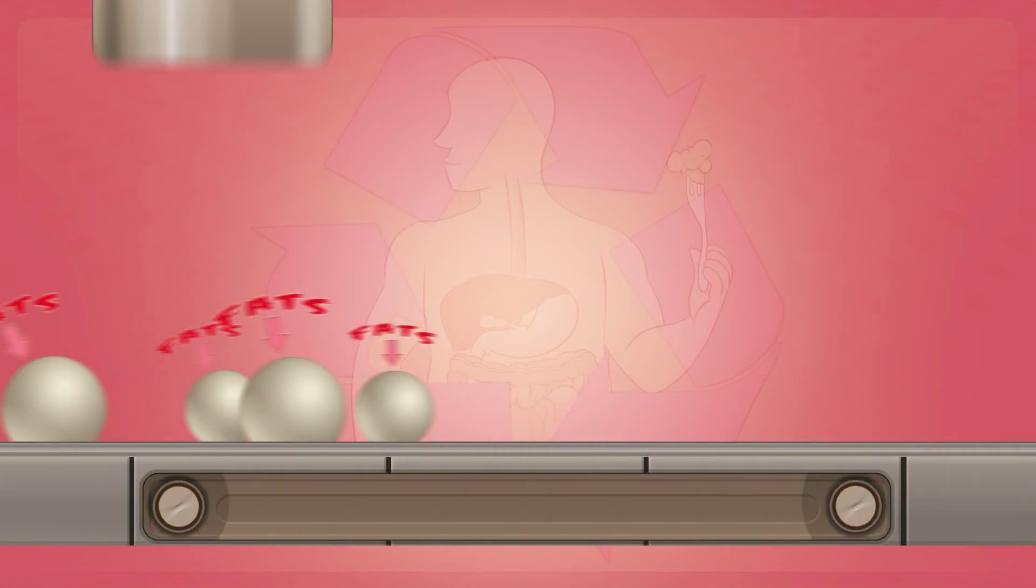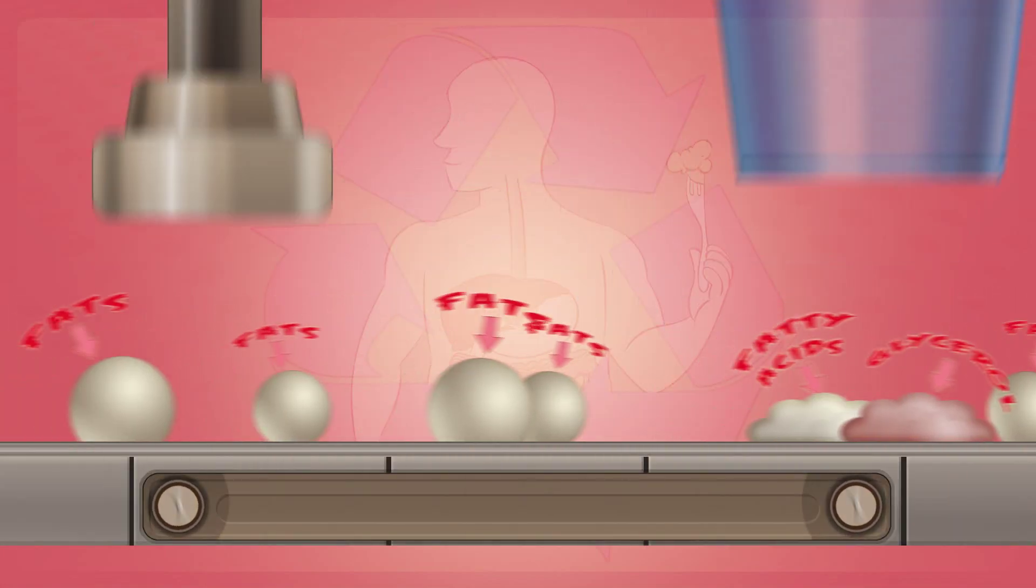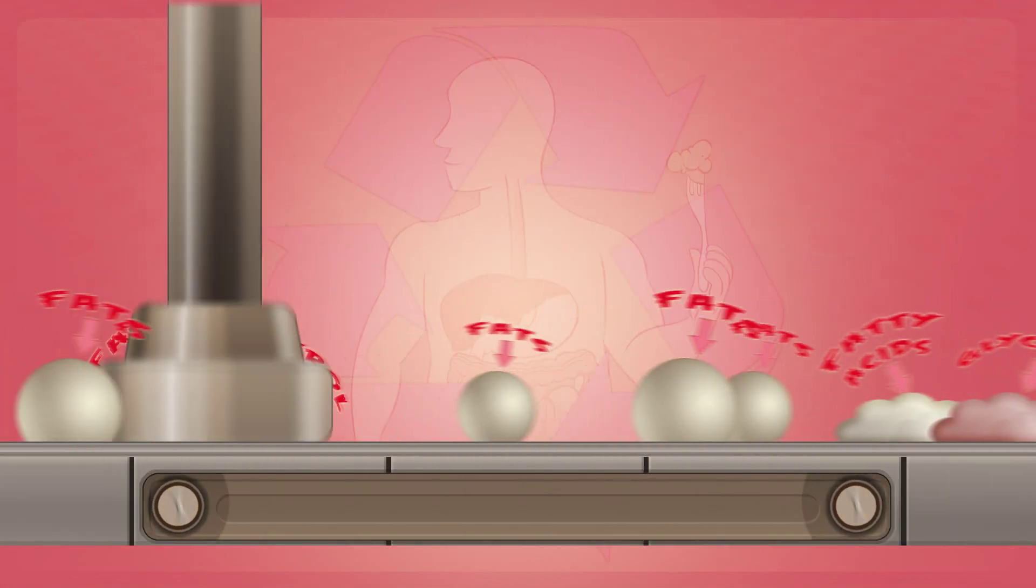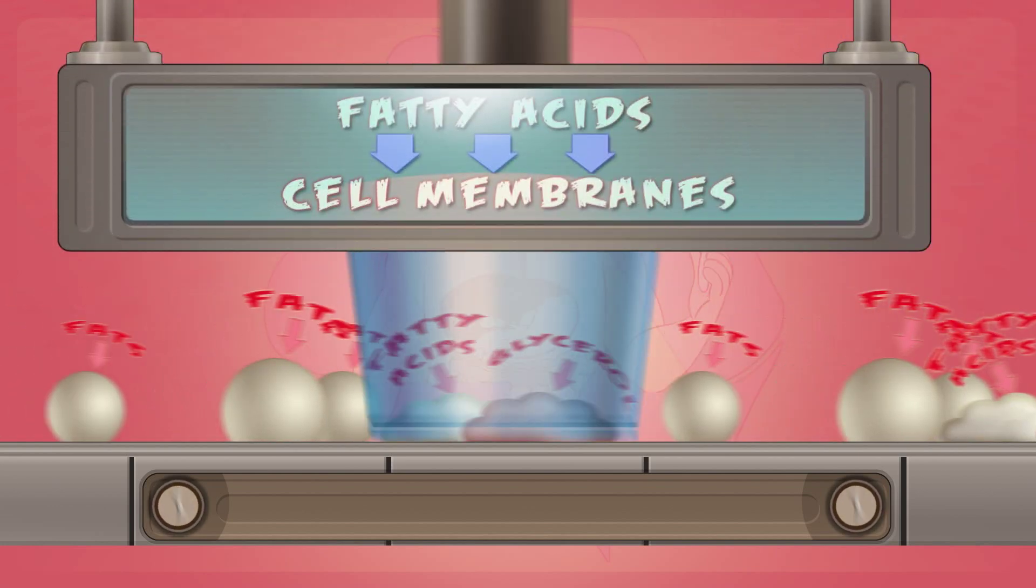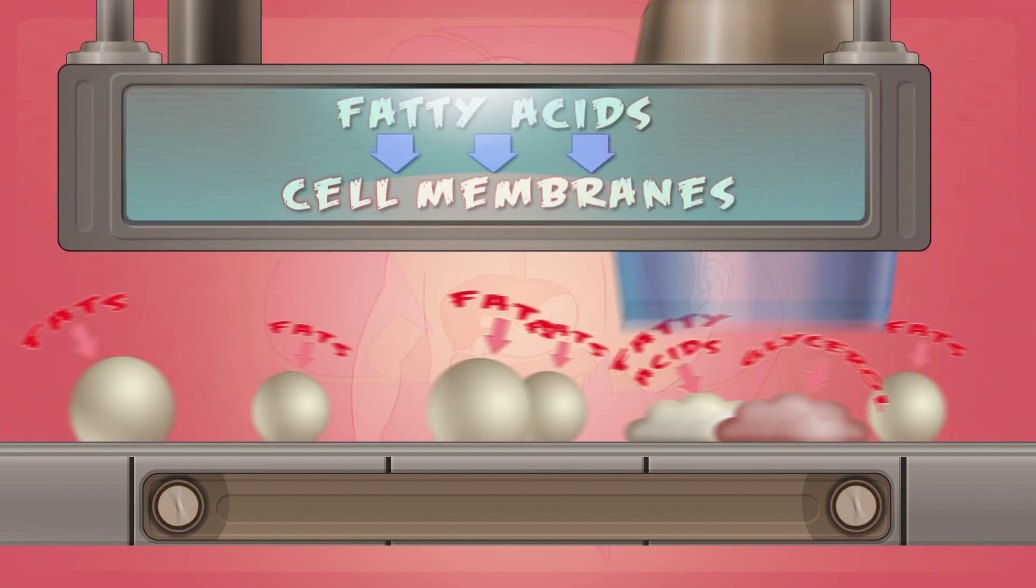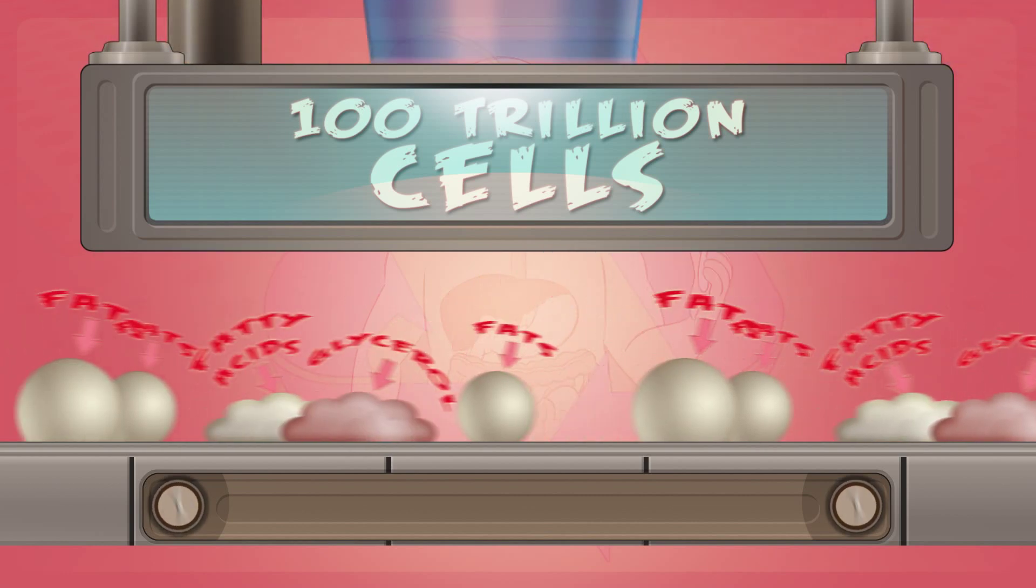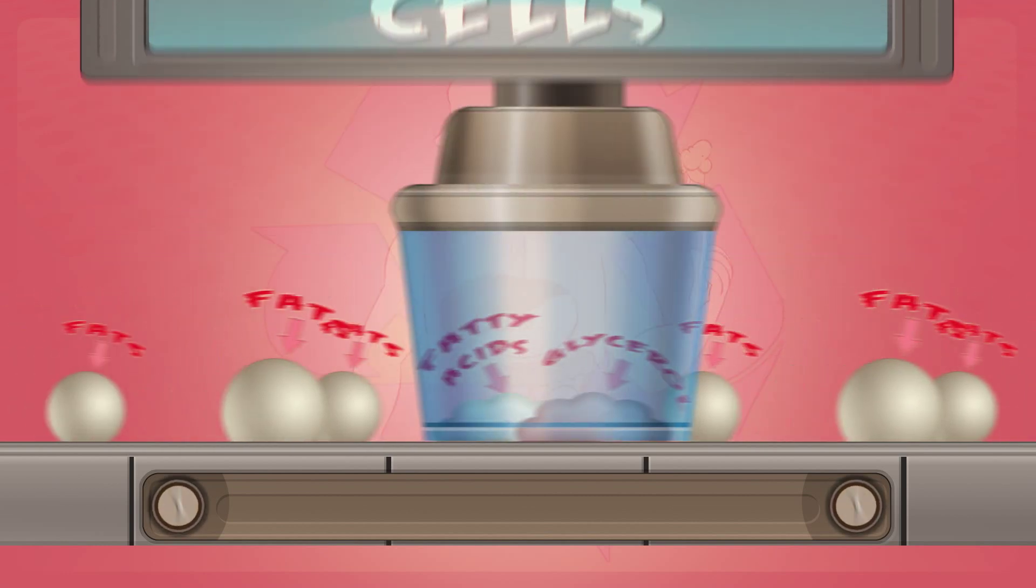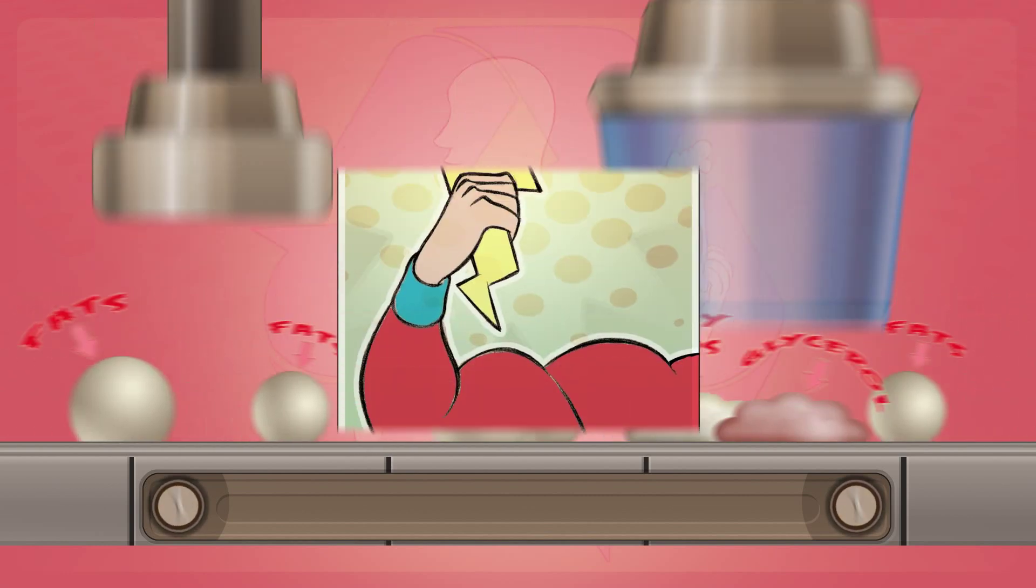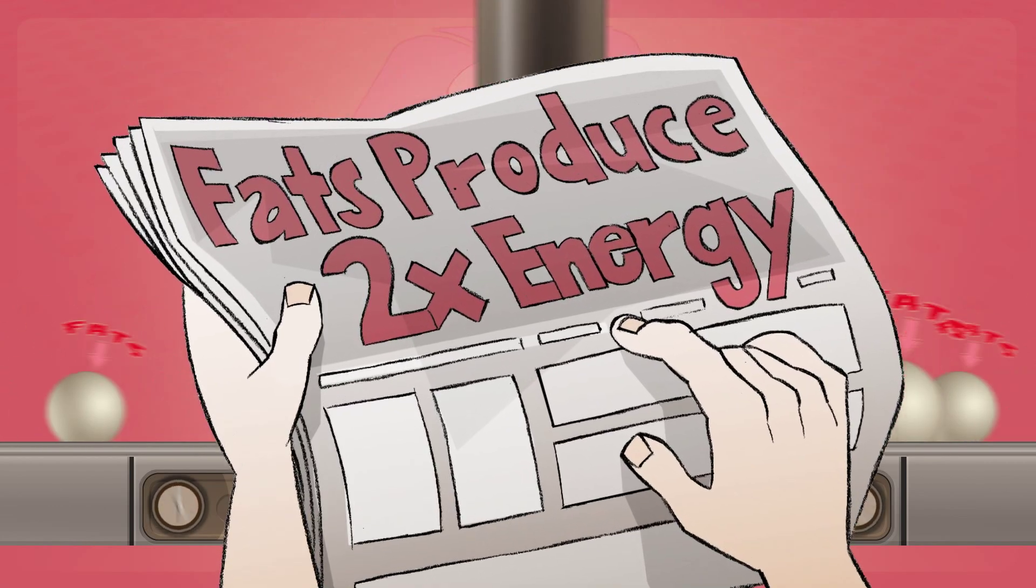When fats are broken down, these fatty acid chains and glycerol are free for the body to use. Fatty acids are essential to constructing cell membranes. Our body contains about a hundred trillion cells, so you can see why fatty acids are so important. Fats are also a great source of energy. They produce twice as much gram for gram as carbohydrates or proteins.